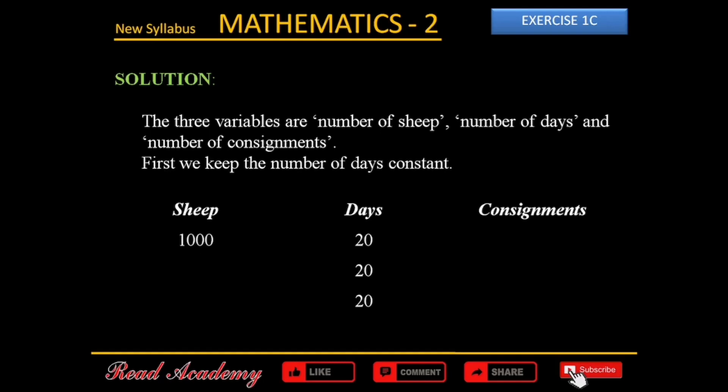1000 sheep can be fed by one consignment of fodder. How many consignments are needed to feed one sheep? To work this out, we are going to divide the number of consignments by the number of sheep. One divided by 1000 equals 0.001.